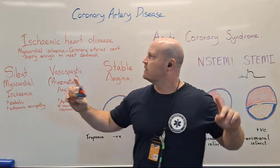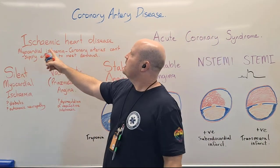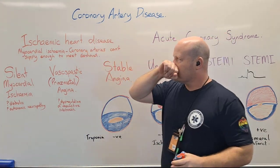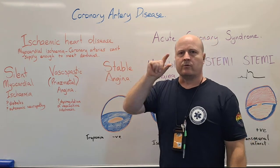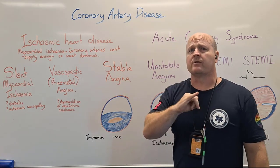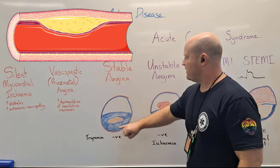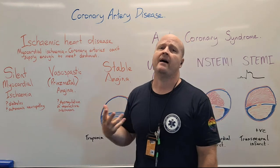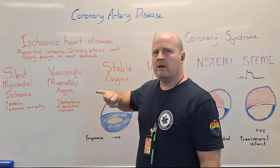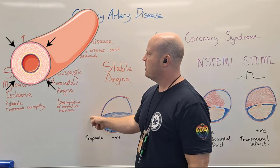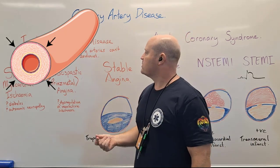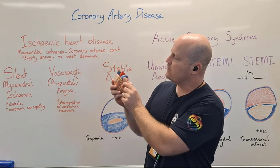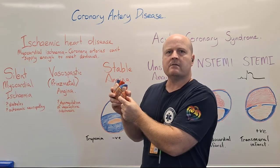Coronary artery disease is broken into two parts: chronic ischemic heart disease and acute coronary syndrome. Ischemic heart disease is when myocardial ischemia occurs — a decrease in blood flow to the heart muscle. Most commonly this is due to atherosclerosis, where plaque makes the lumen of the coronary arteries too small. It can also occur for other reasons, such as vasospastic or Prinzmetal angina, where dysregulation of vasoactive substances causes vasospasm and constriction of the coronary arteries, leading to pain.